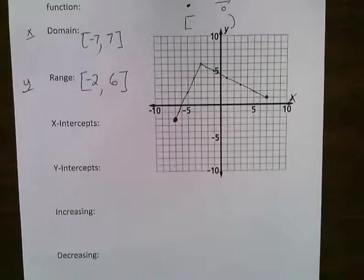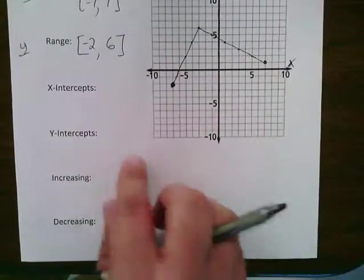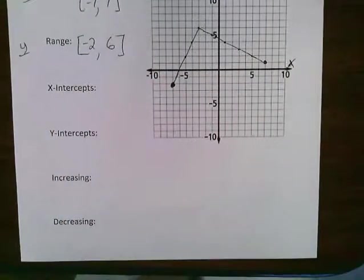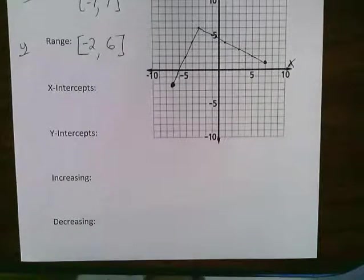Next, we have x-intercepts and y-intercepts, which are pretty self-explanatory, but it's good to talk over them. X-intercepts is at any point where my graph crosses the x-axis. At any point my graph crosses the x-axis. You could have one, you could have none, or you could have several.